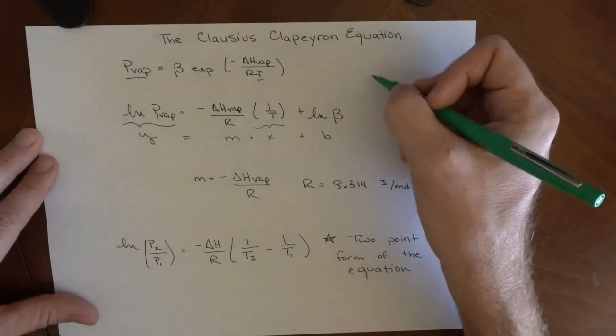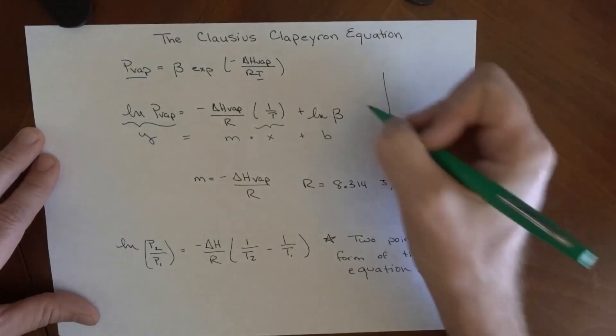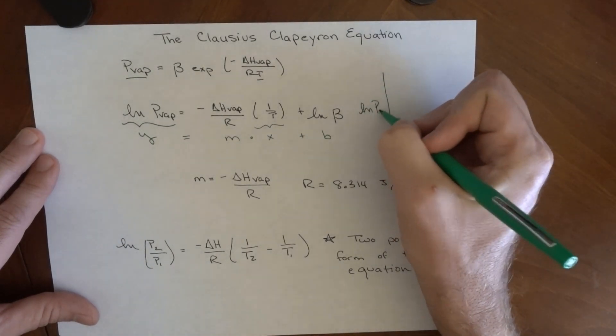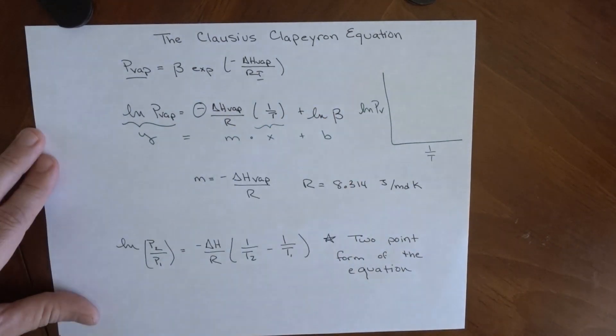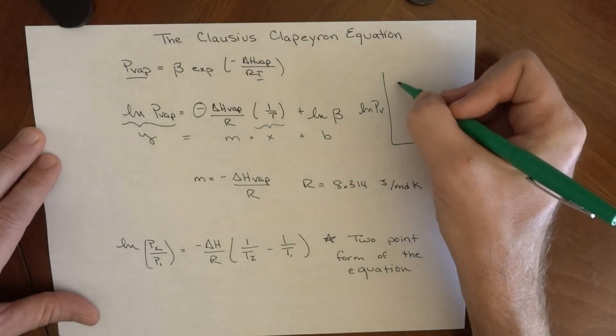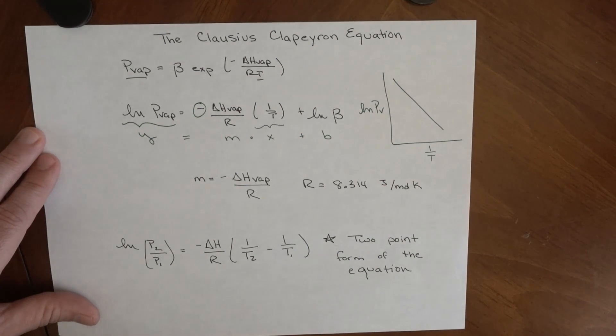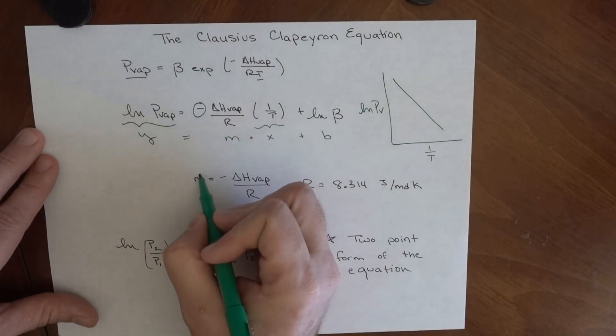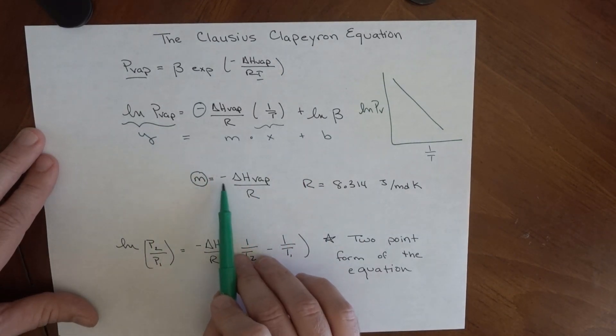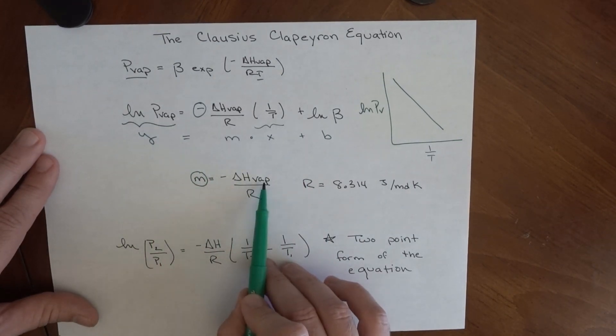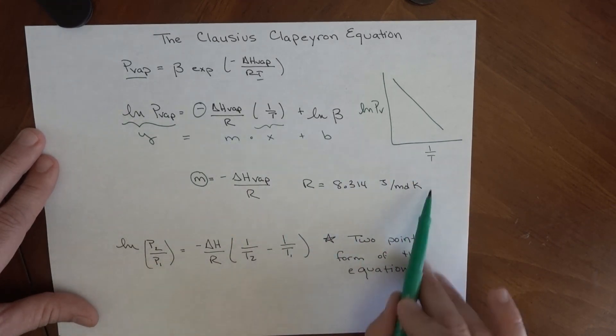If I plot these two things, natural log of vapor pressure versus 1 over temperature, there's a negative sign here. So what I end up with is a line that's sloping down in this direction. The slope of that line, m, is equal to negative ΔH of vaporization divided by R, and R is a constant we always know.